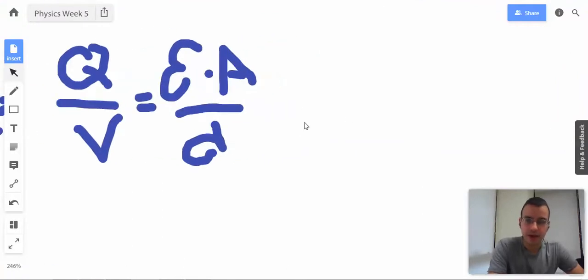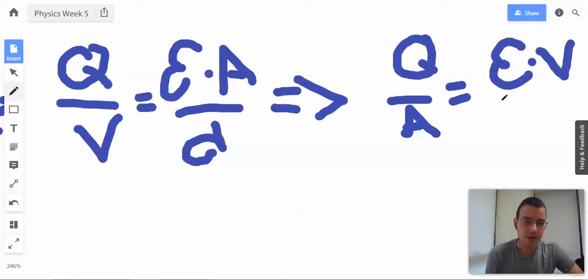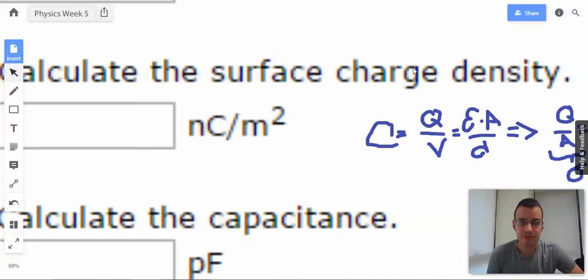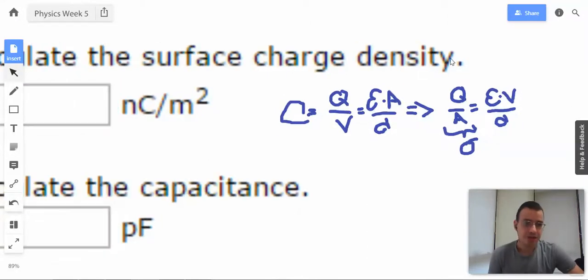Now we're going to rearrange this. Q over A equals epsilon times voltage over distance. And this guy right here will be sigma, by sigma I mean surface charge density. We can kind of tell that because charge is measured in coulombs and area is measured in meters squared, so that seems reasonable.